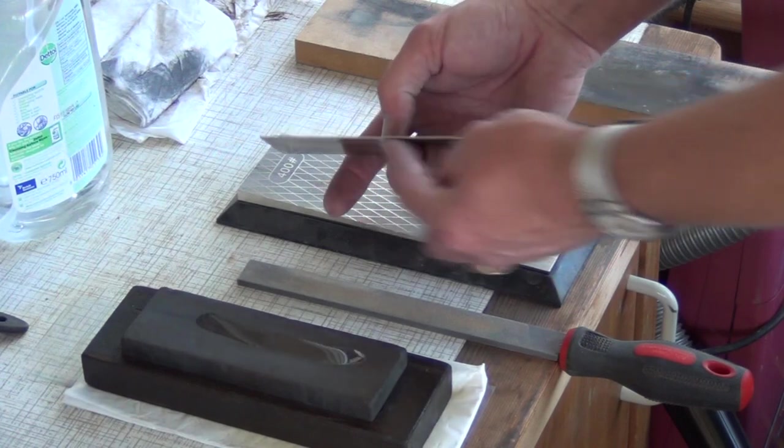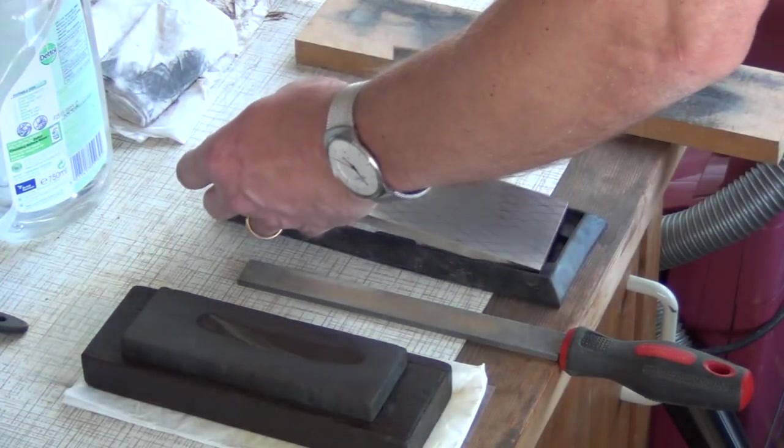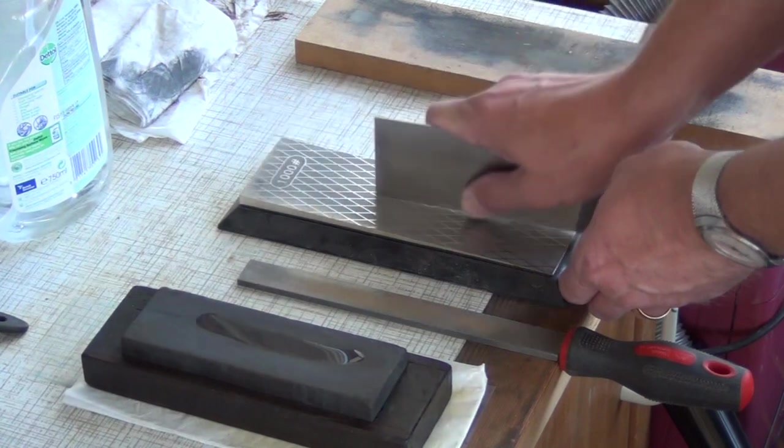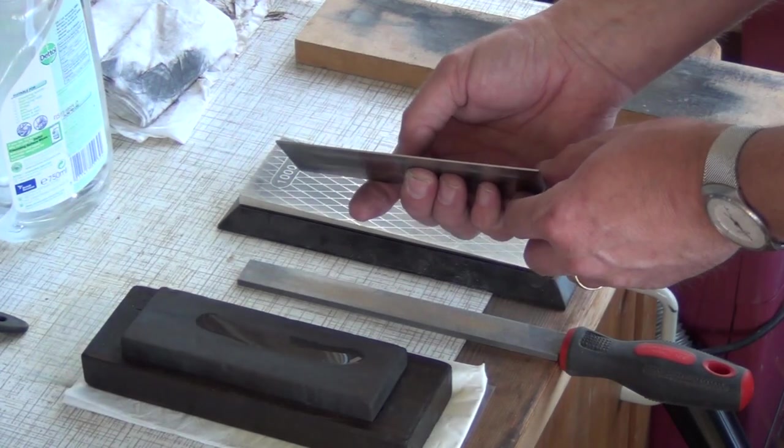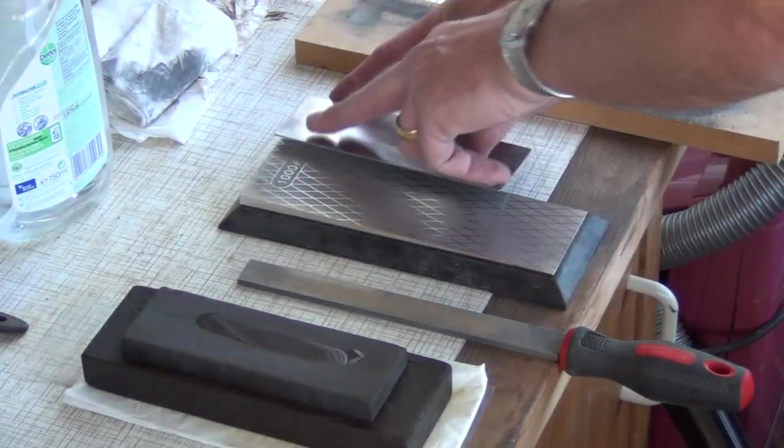Just work until you've got a nice consistent scratch pattern. Then move on to something like a 1000 grit. Again, until you've got a nice consistent scratch pattern. Then run the sides on the stone,